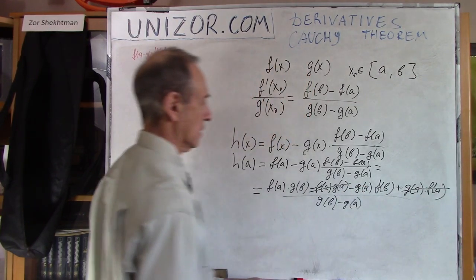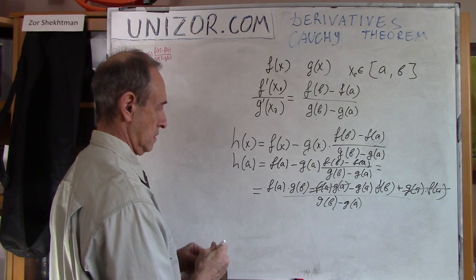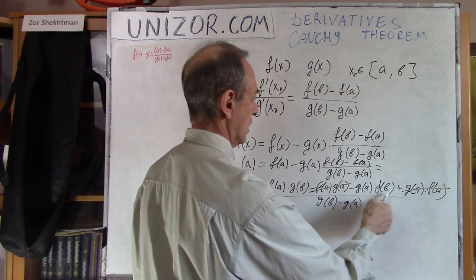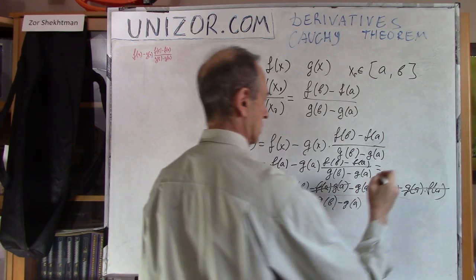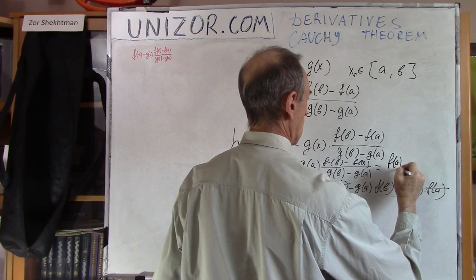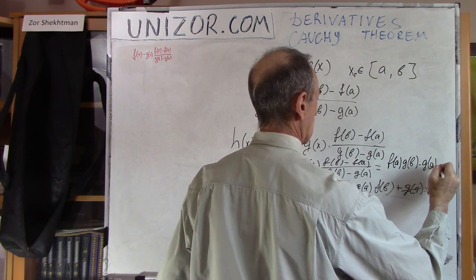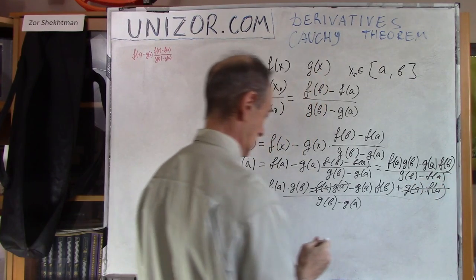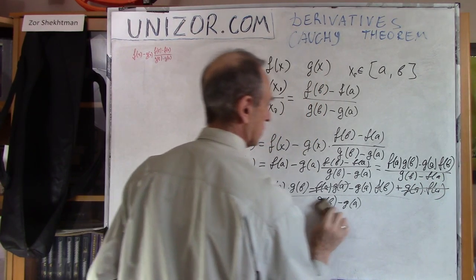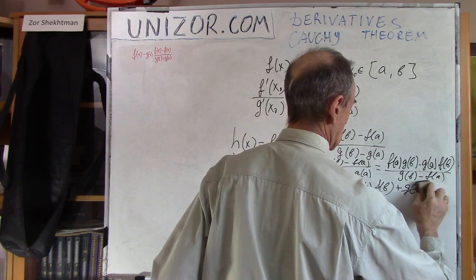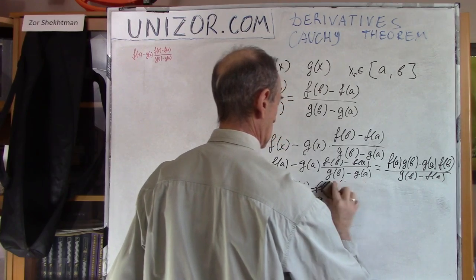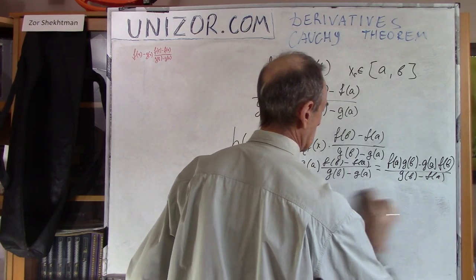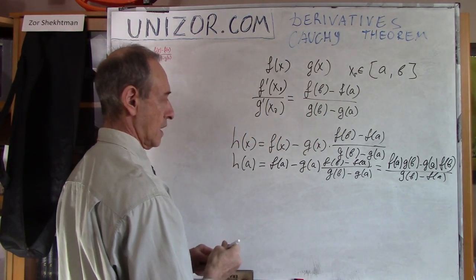This and this cancel out. And what do I have? I have f of a times g of b minus g of a times f of b. So I put it here. f of a g of b minus g of a times f of b.